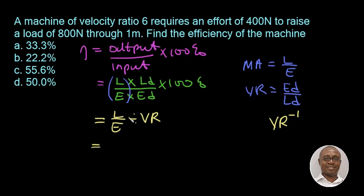So for load we have as given in the question 800 Newton. Then for effort which is 400 Newton. We still multiply by 100. So we have to divide this by the velocity ratio which is given as 6. Then to multiply by 100.